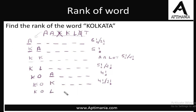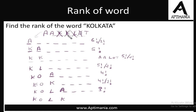With K fixed, we move to the next letter O — O is required, so we fix it and cancel it. Now K-O is fixed. Starting again from A: A is not required in the word at this position, so with 4 letters left and 4 positions, we arrange them in 4 factorial ways. Next, K and O are already fixed; we move to K — K is also not required. We have 4 letters: A, A, L, T. Since A repeats, these arrange in 4 factorial divided by 2 factorial ways.